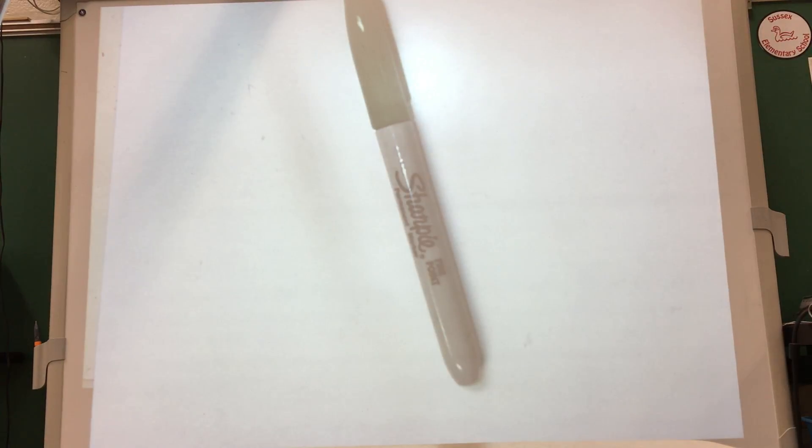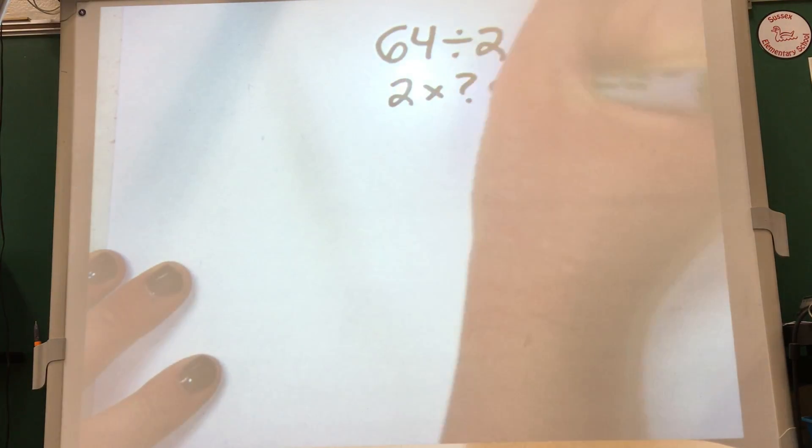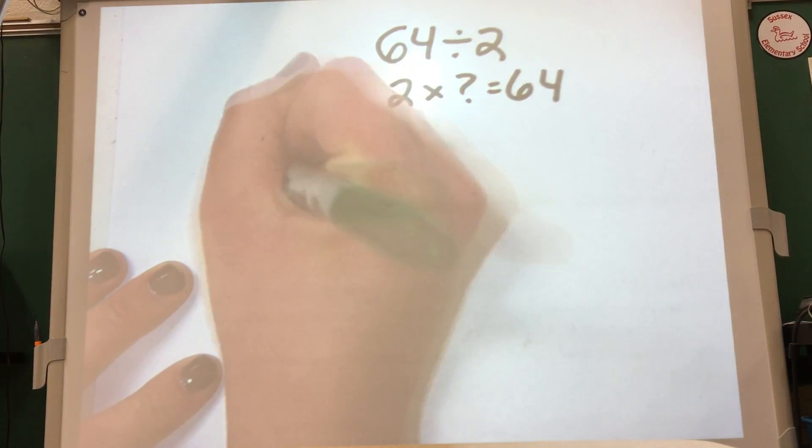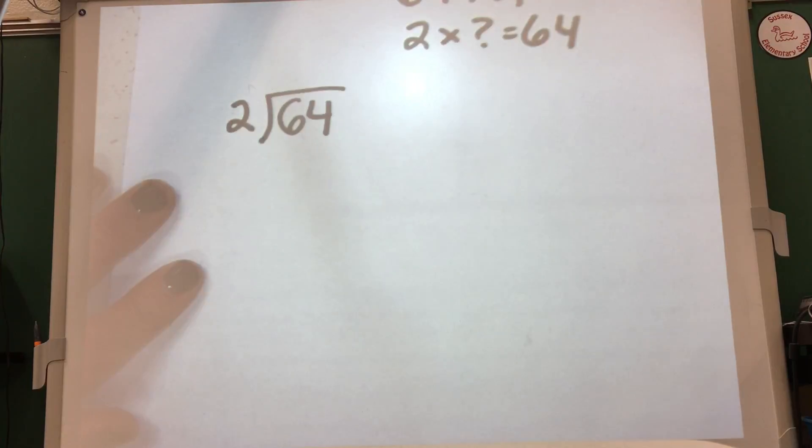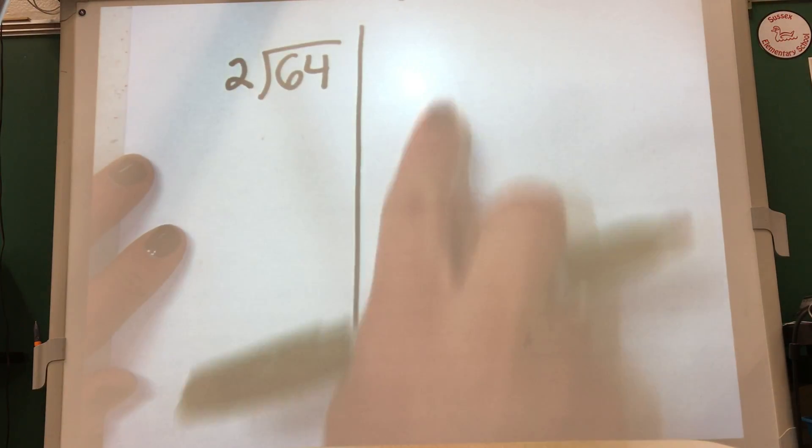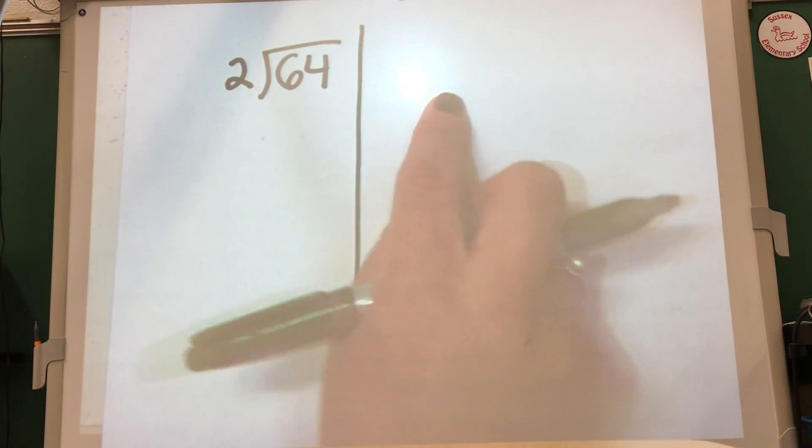Okay, I'm going to start out with 64 divided by 2. Sorry about that, or 2 times what equals 64. So I'm going to start to set it up like traditional long division and I normally like to draw a line, and you'll see why. I'm trying to separate information on this side from information on this side.